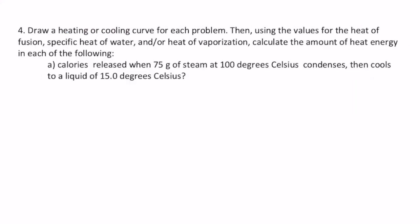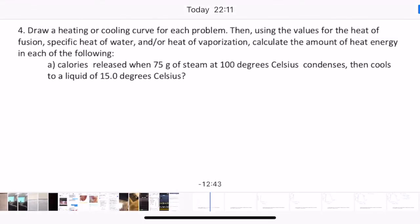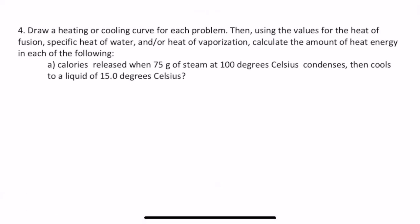So, number four. Draw a heating or cooling curve for each problem. Then, using the values for the heat of fusion, specific heat of water, and or heat of vaporization, calculate the amount of heat energy in the following. So, basically, you've got to know which problems you're working with and which formulas you're going to need. So, calories released when 75 grams of steam at 100 degrees Celsius condenses, then cools to a liquid of 15 degrees Celsius. So, what problem are you working with? You've got to ask yourself that question. If you don't ask yourself that question, then you're not going to know the answer to what you're supposed to do.